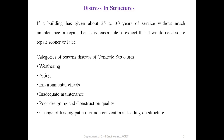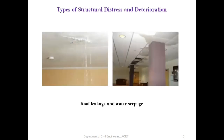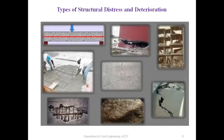Third, change of loading pattern or non-conventional loading on the structure; fourth, water leakage leading to corrosion of the concrete structure. These are the main reasons why distress can take place in concrete structures. Types of structural distress and deterioration include roof leakage, water seepage, beam distress, structural failure, and concrete failure — all are distresses in concrete and steel.